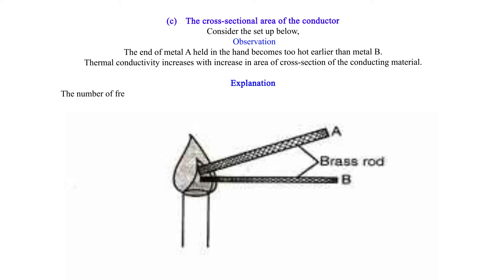Explanation: The number of free electrons per unit length of the thicker length A is more than those in the thin metal rod B.